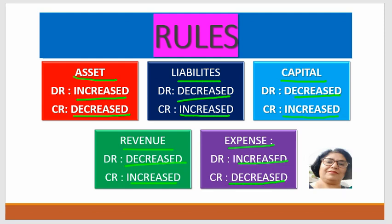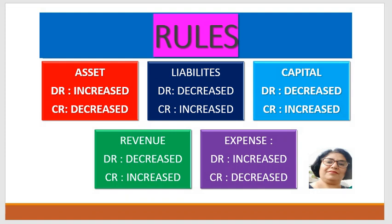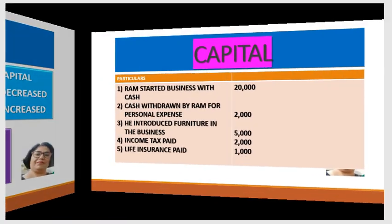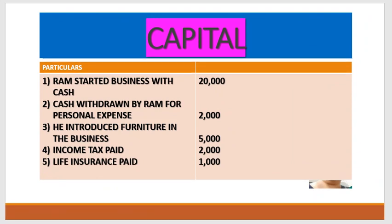So here we look at the rules again: asset is debited when increased and credited when decreased. Expense is debited when increased and credited when decreased. For liability, capital, and revenue — we credit them when increased. So if the liability, capital, or revenue is increased, we credit it. For example, a loan — we credit it.